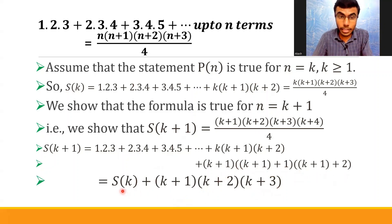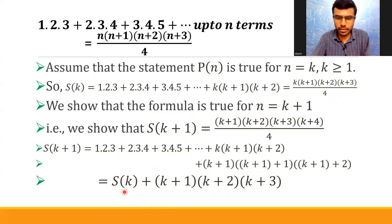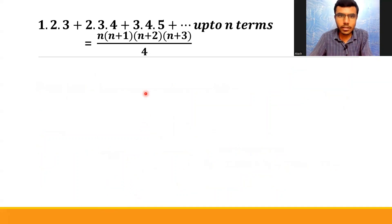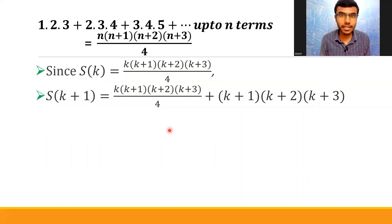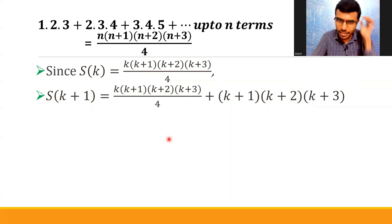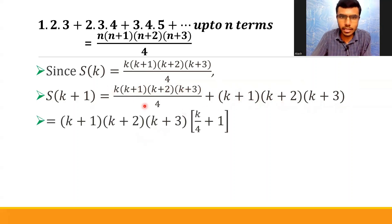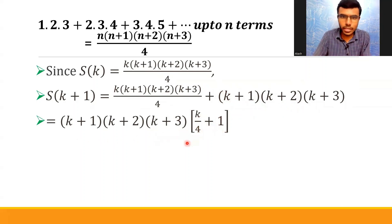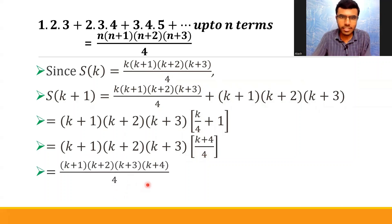We know that S(k) = k(k+1)(k+2)(k+3)/4. So substituting: S(k+1) = k(k+1)(k+2)(k+3)/4 + (k+1)(k+2)(k+3). Now take (k+1)(k+2)(k+3) common from both terms — you're left with k/4 + 1, which gives (k+4)/4. So S(k+1) = (k+1)(k+2)(k+3)(k+4)/4. Your proof is done — that's exactly what we needed to show.